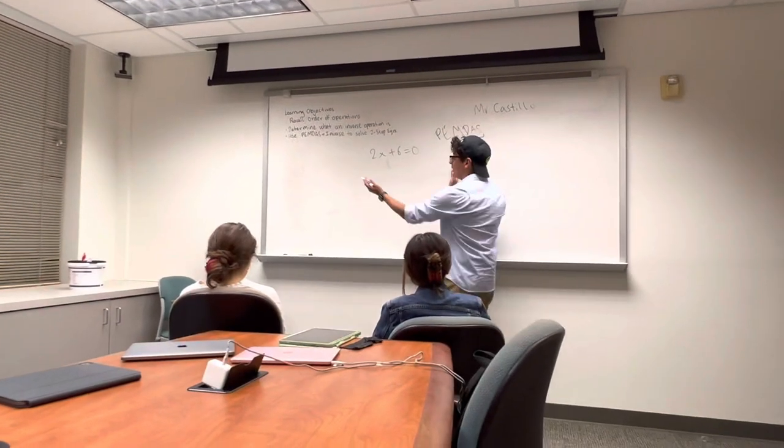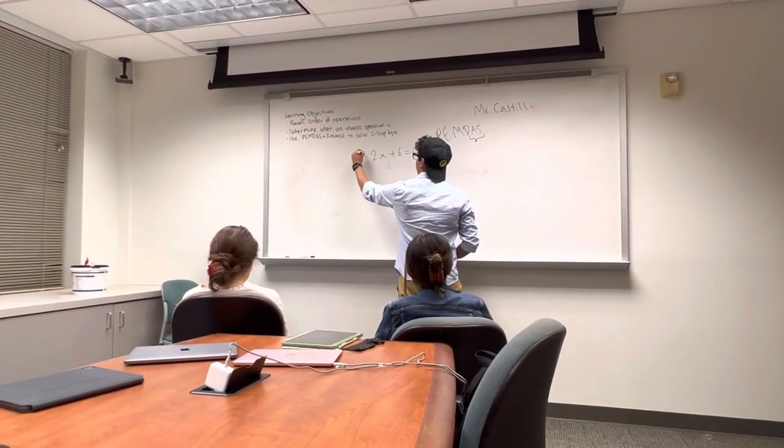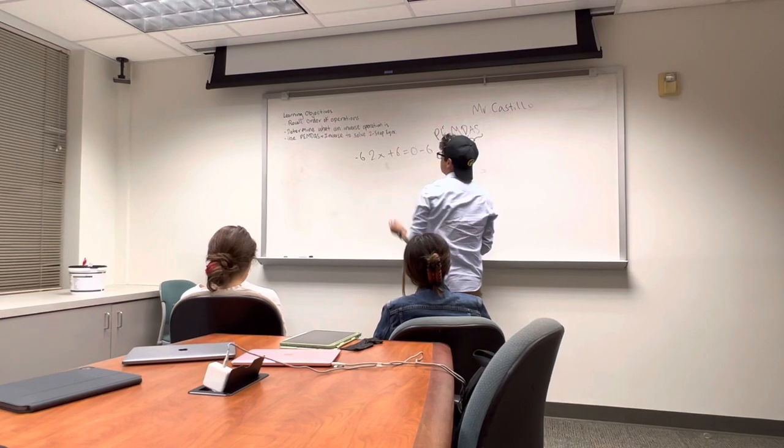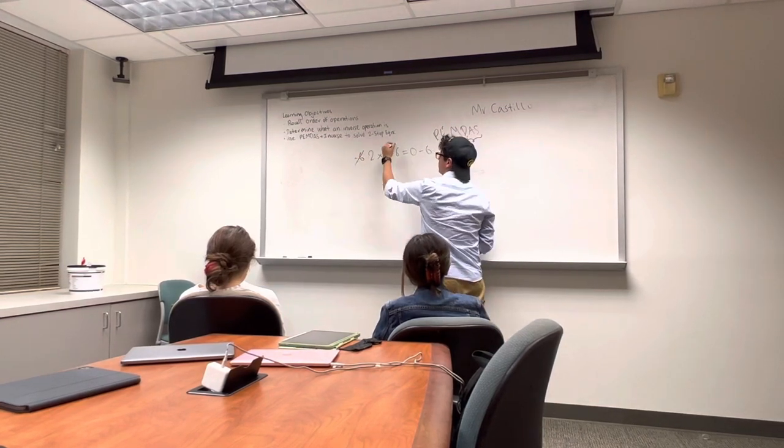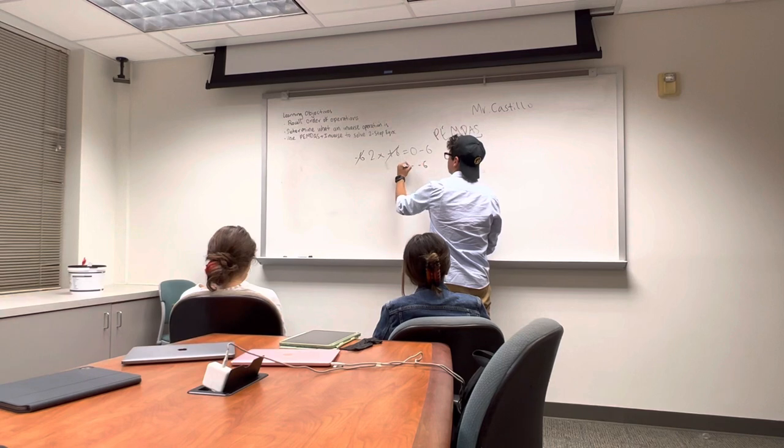So we would subtract the whole thing, both sides, by 6. So we would have minus 6, minus 6, right? And so now this term will cancel out on this side, and on this side we would end up with minus 6. And now we have 2x is equal to negative 6.